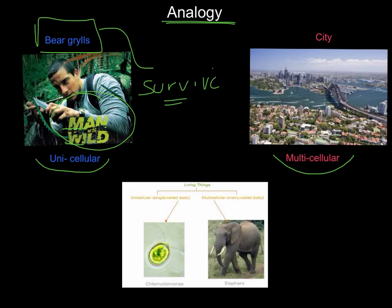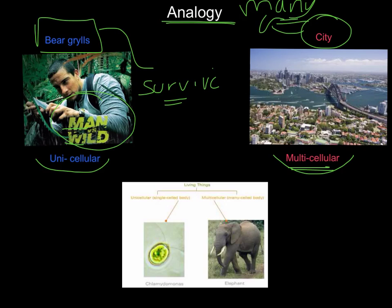Whereas if you live in a city, that would be an example of multicellular. Multi means many, so in a city we've got many people living there. They all have different jobs to make sure that city runs well — there's teachers, there's police officers, there's firefighters. They all work together to make sure the city survives and the people within the city survive. So multicellular would be like a city, whereas unicellular would be like Bear Grylls — a lone survivor versus a lot of people working together to keep that city alive.